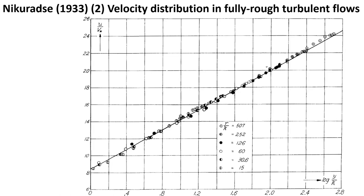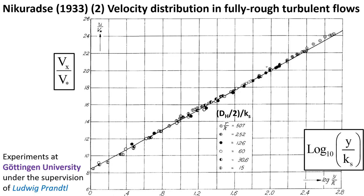Nikuradse presented this velocity distribution with this graph showing the dimensionless streamwise velocity as a function of distance perpendicular to the wall. The experiments were performed at Göttingen University under the supervision of Ludwig Prandtl.